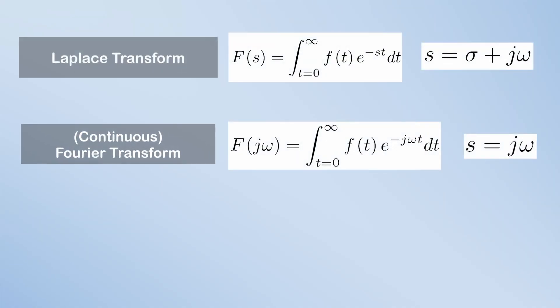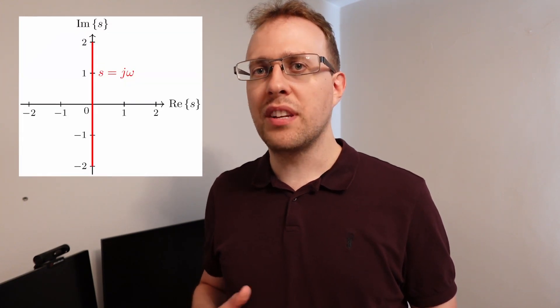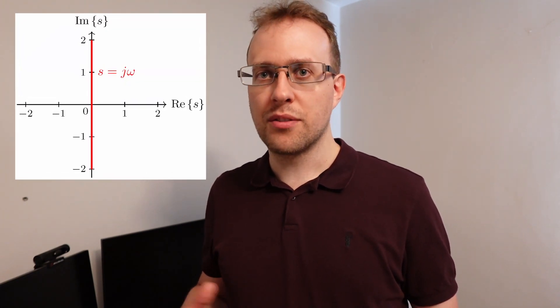This version of the transform is known as the continuous Fourier transform, and there's also the inverse Fourier transform. The Fourier transform is also known as the frequency response, or the spectrum, and it can be seen as the Laplace transform solved only along the imaginary S axis.